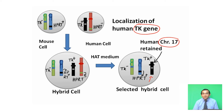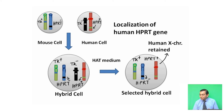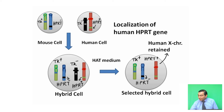In the reciprocal cross, a mouse cell that is HPRT-minus is hybridized with a human cell that is HPRT-plus. Here also, there is a panel of cells where all chromosomes are lost and one human X chromosome is retained. Since this retained human X chromosome is the only source of HPRT, the HPRT gene is localized on the human X chromosome, detected through the activity of the HPRT enzyme. Because mouse is HPRT-minus, it is not synthesizing any HPRT. From this selected hybrid cell, we can conclude that the HPRT gene is located on the human X chromosome.